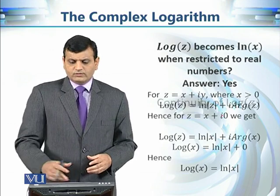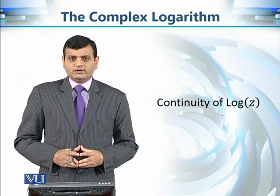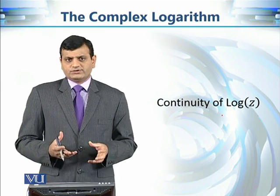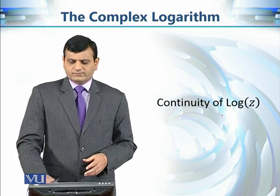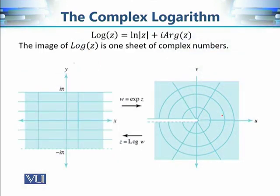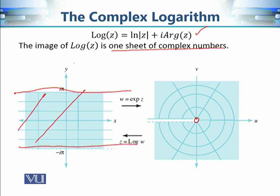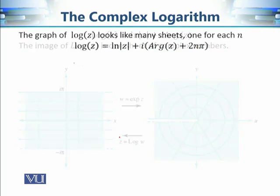Now moving on to the continuity of the principal log — in this module we focus on continuity, and in the next module we will see differentiability. The domain is the set of all non-zero complex numbers. The output of the principal log is one sheet of complex numbers, specifically a fundamental period strip — an infinite strip that represents the image values of the principal log.